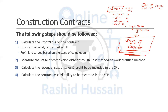The first step is to calculate the profit or loss on the contract. It's a simple working — you need to compare the contract price with the total cost and you get the profit or loss. If it is a loss, it should be immediately recognized in full.